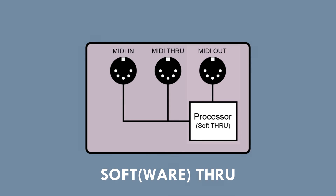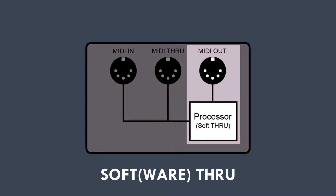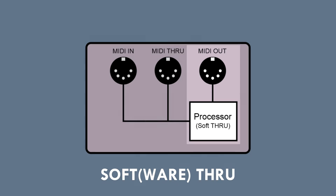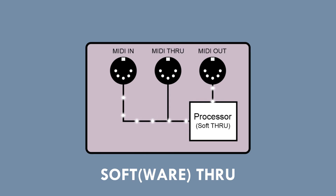The second type of through is what's known as a soft through, where the MIDI out port becomes the through. This feature usually needs to be turned on in the software, so check for a parameter like that in the device and make sure through is enabled.